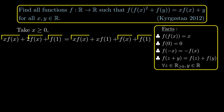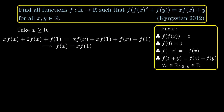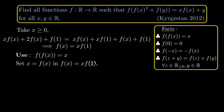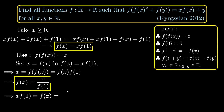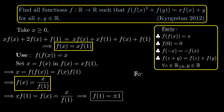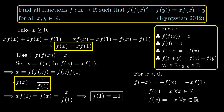Cancelling identical terms x·f(x), f(x), and f(1) from both sides leaves f(x) = x·f(1) for x ≥ 0. Using f(f(x)) = x to solve for f(1): setting x = f(1) gives f(1)² = 1, so f(1) = ±1. For x < 0, we apply the odd function property. Therefore f(x) = x for all real x, or f(x) = -x for all real x, and this concludes the second solution.